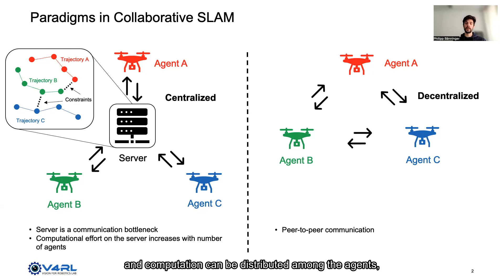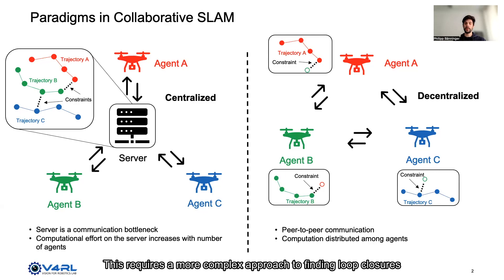However, agents only have a local view of their trajectory including constraints to other agents. This requires a more complex approach to finding loop closures and global optimization.